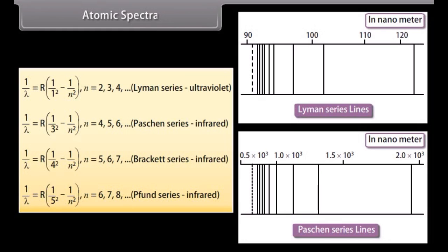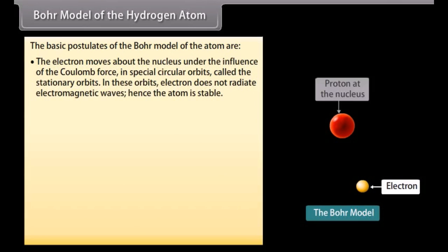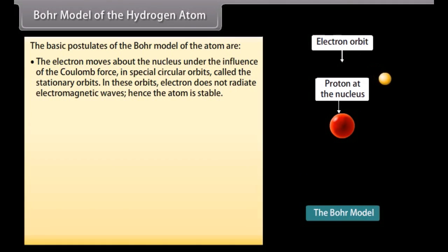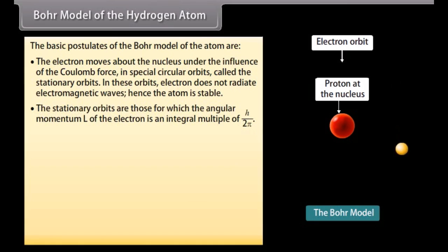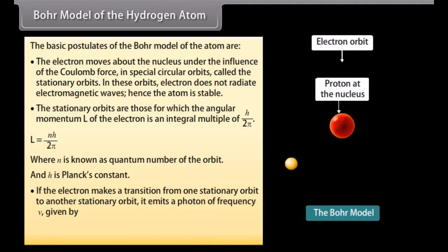Bohr model of the hydrogen atom. The basic postulates of the Bohr model of the atom are: The electron moves about the nucleus under the influence of the Coulomb force in special circular orbits called the stationary orbits. In these orbits electron does not radiate electromagnetic waves, hence the atom is stable. The stationary orbits are those for which the angular momentum L of the electron is an integral multiple of H upon 2 pi. L equals NH upon 2 pi where N is known as quantum number of the orbit and H is Planck's constant. If the electron makes a transition from one stationary orbit to another stationary orbit, it emits a photon of frequency nu given by EI minus EF upon H.